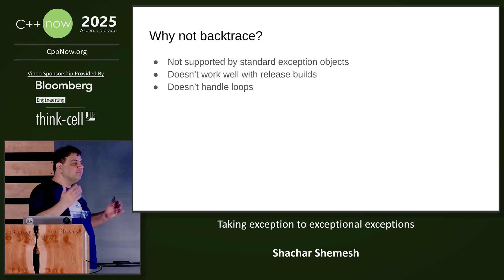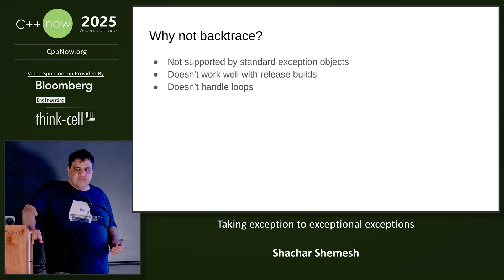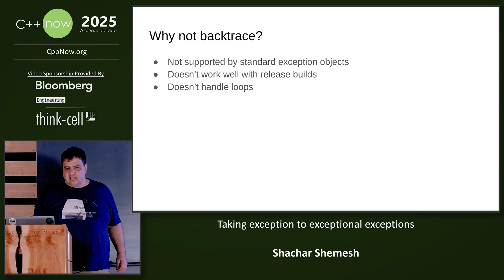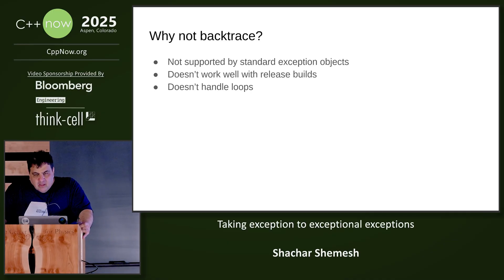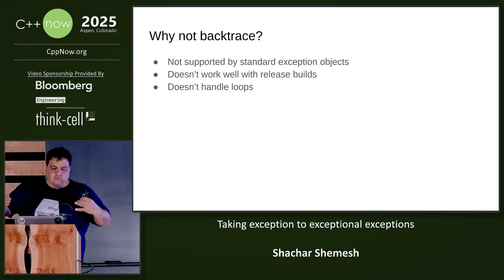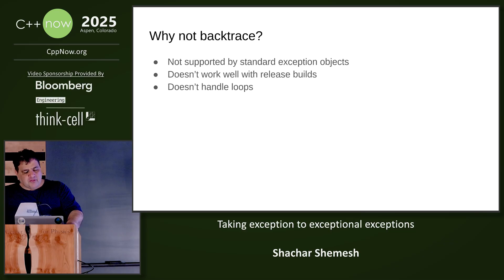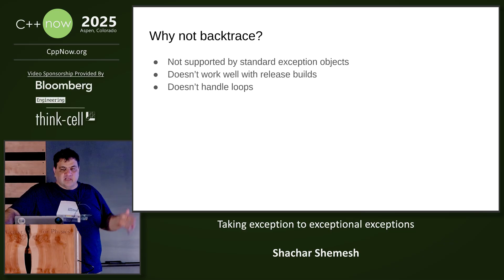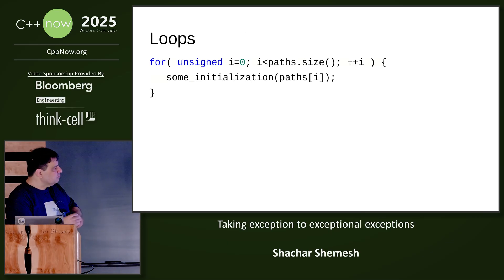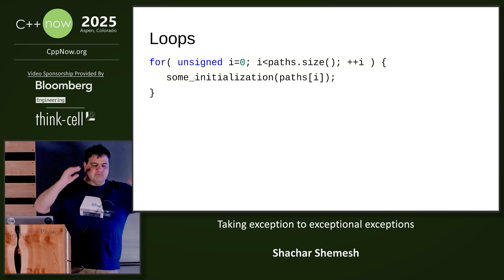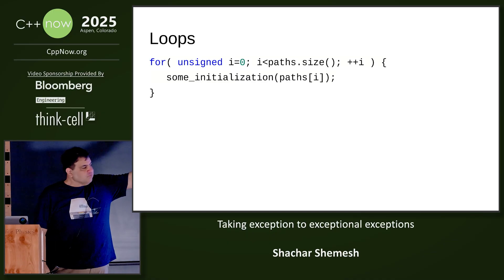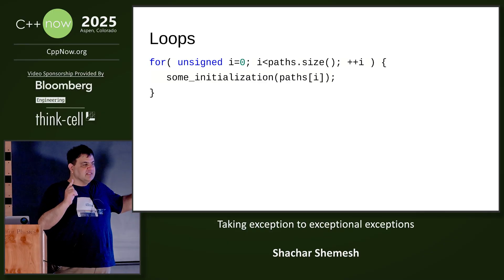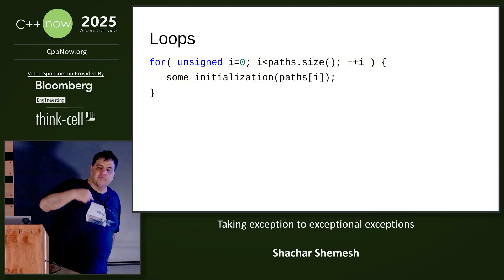Other languages use backtrace. Java and Python have backtrace on the exception object, which can give you the path to the exception point. But std::exception does not, and discussing whether that's good or not is kind of moot. Also, backtrace doesn't work well with a release build because of frame pointer optimizations. And it doesn't help with loops — if we have an initialization loop, try to open all paths, and one fails, the backtrace for all of those opens is identical. Nothing here saves the context of which iteration of the loop actually failed.